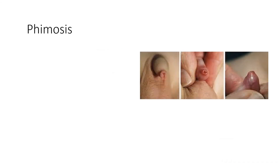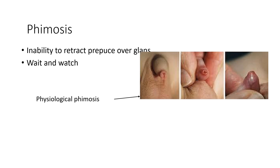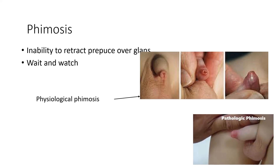Coming to the last transient neonatal phenomenon — phimosis — defined as inability to retract the prepuce over the glans. Since it is physiological, wait and watch is the best management here. But note that if a similar finding is seen in older children, then one must look for treatment.